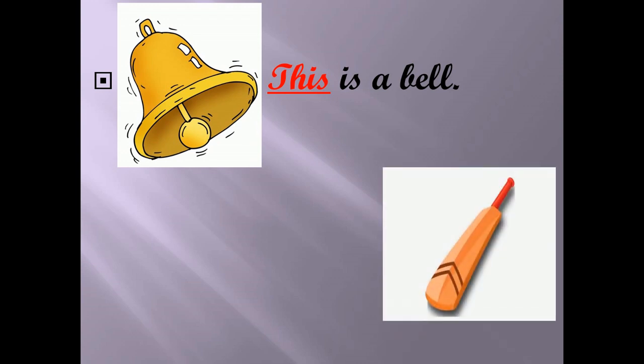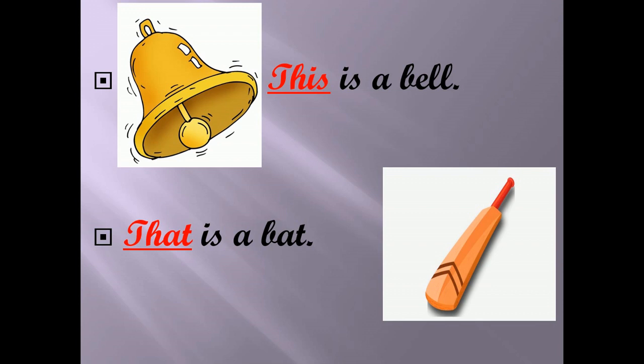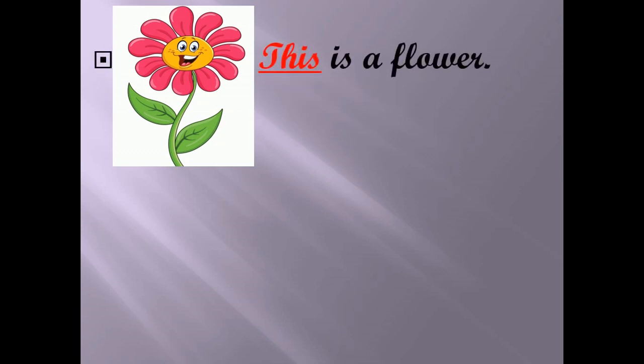Next picture — it is a bat, and it is far. So for far, we write 'that.' The sentence will be: 'That is a bat.' What is this, students? It is a flower, and it is near. For near, we will write 'this,' so the sentence will be: 'This is a flower.'